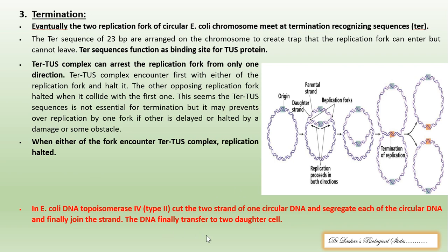In E. coli, DNA topoisomerase IV (type 2) cuts the two strands of one circular DNA, segregates each of the circular DNA molecules, and finally joins the strands. The DNA is then transferred to the daughter bacterial or prokaryotic cell.